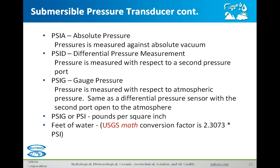Absolute pressure transducers are used where one is dropped down a pipe and basically left for a month or so. These types of pressure transducers have built-in loggers and they grab the data out. Of course, that is not real-time, and some organizations are moving towards getting real-time data from their groundwater wells.